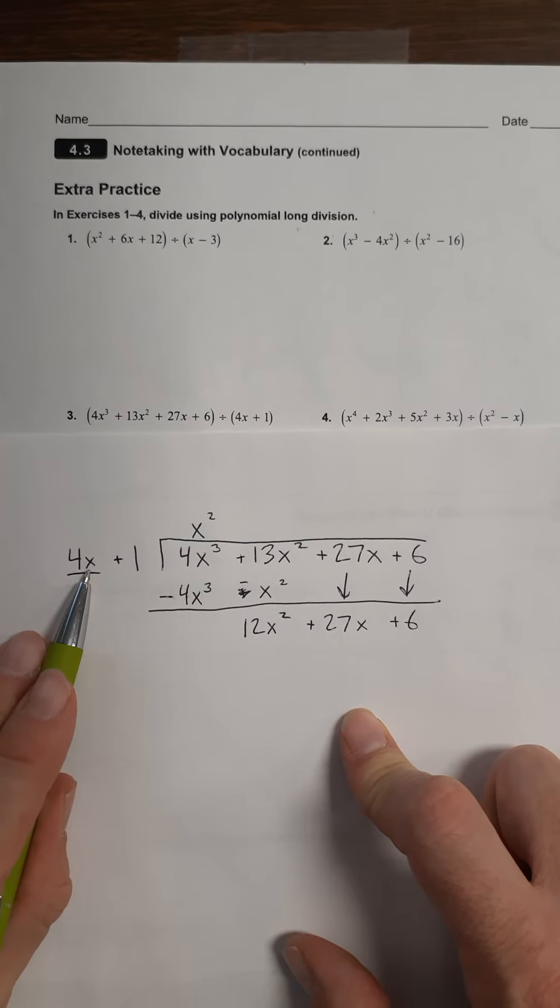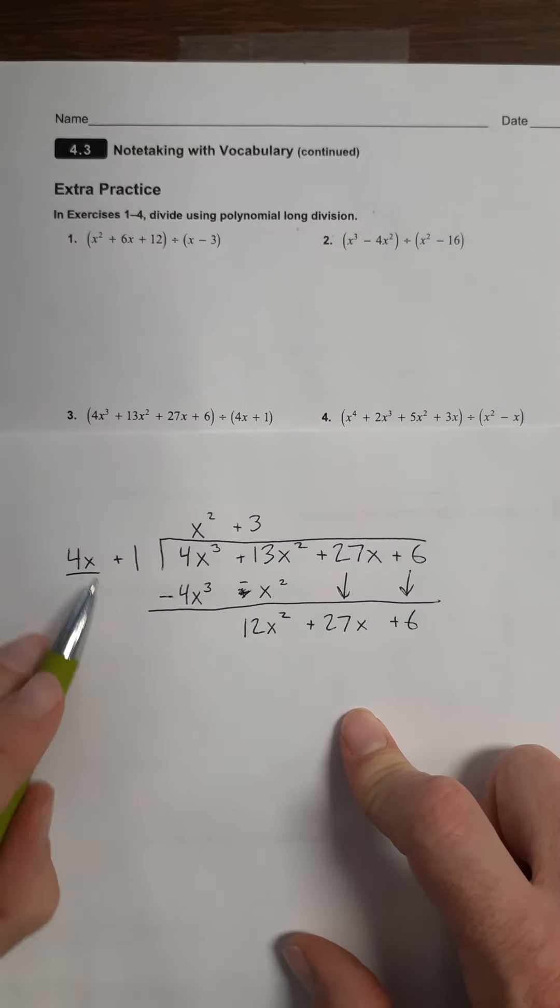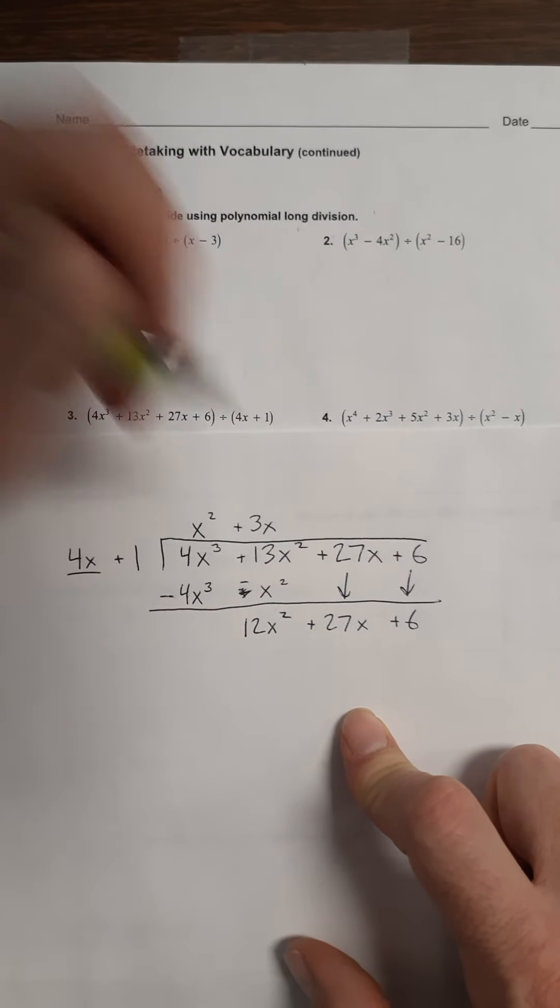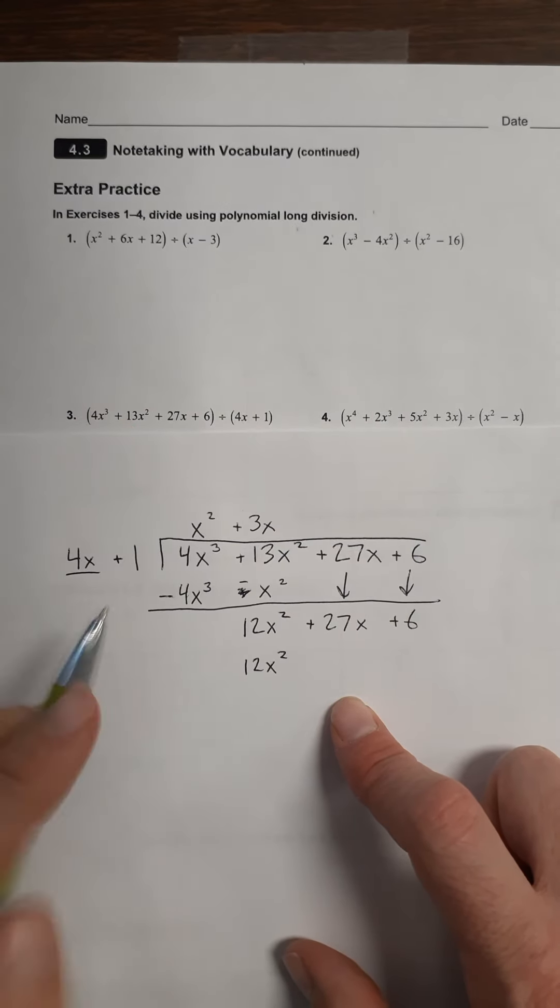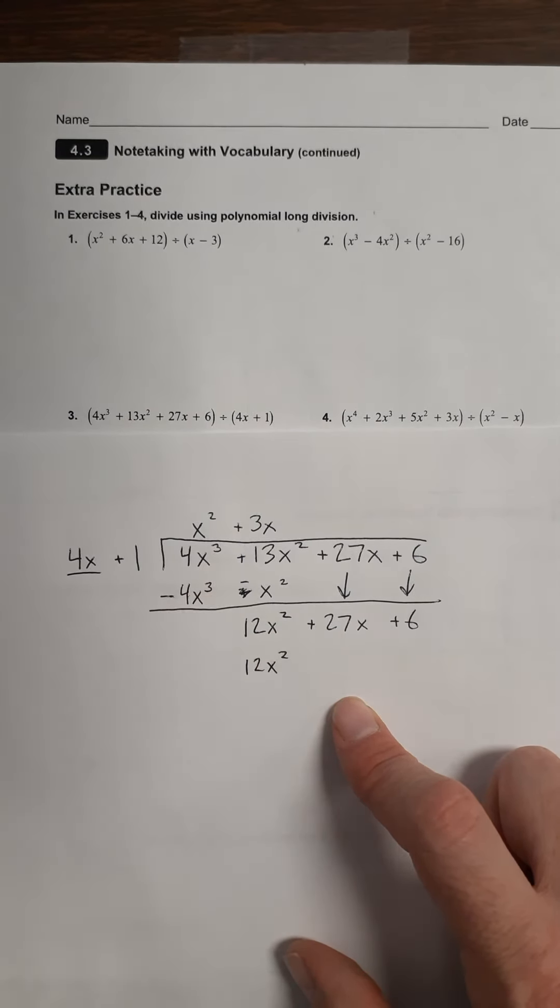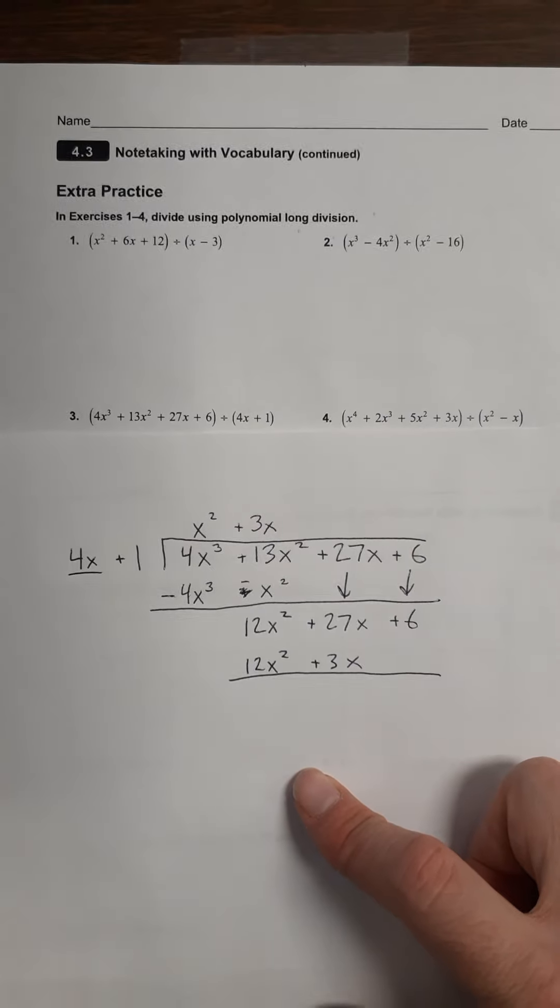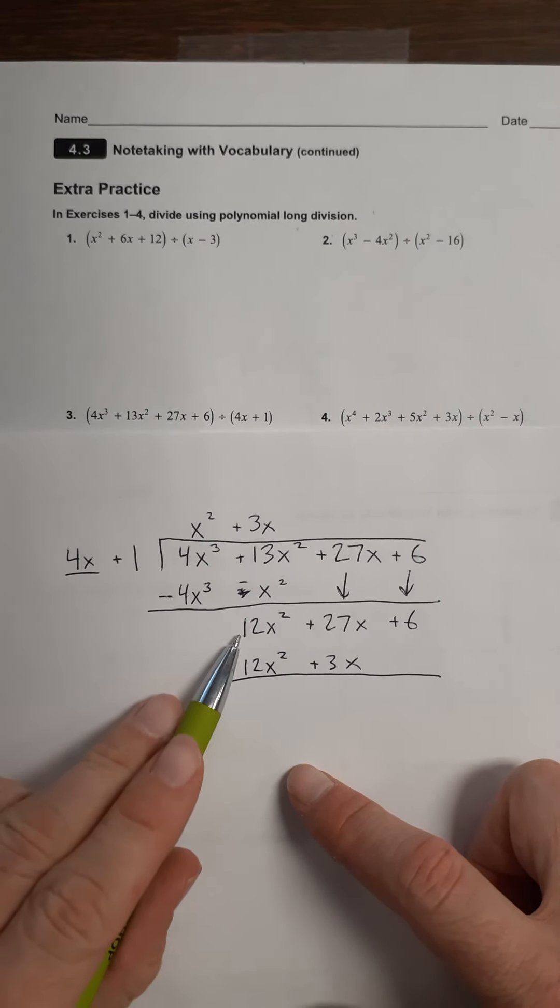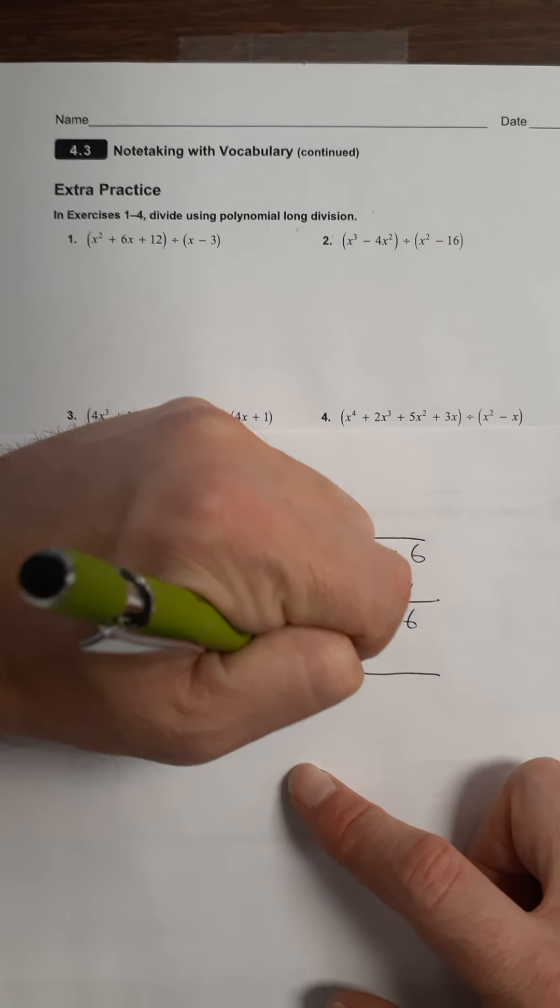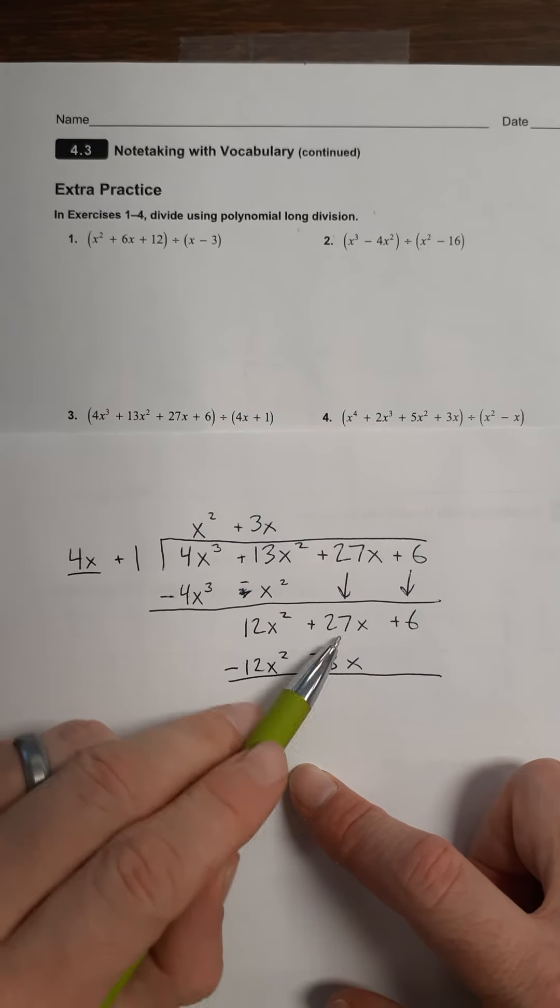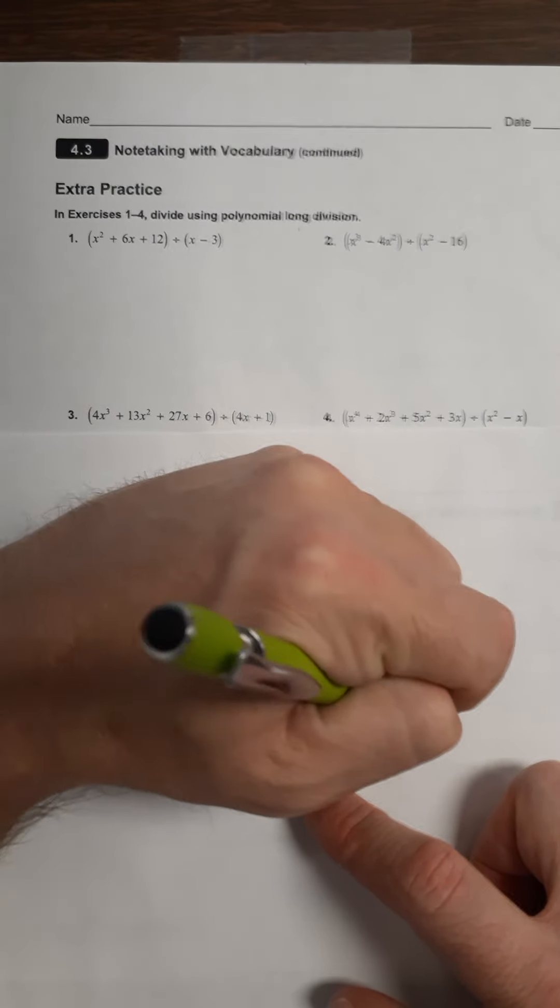What do I have to multiply this by to turn it into that? 4 times 3 is 12, so plus 3x. x times x is x squared, so plus 3x. So that will get me 12x squared. 1 times 3x would just be 3x. I need these to cancel out, so I need to make this the opposite. So I'll have to do that right here. These go away now. These are like terms again, so 27x minus 3x is 24x plus 6.